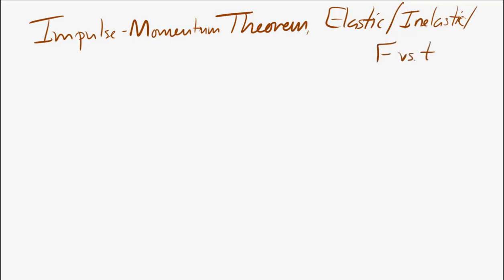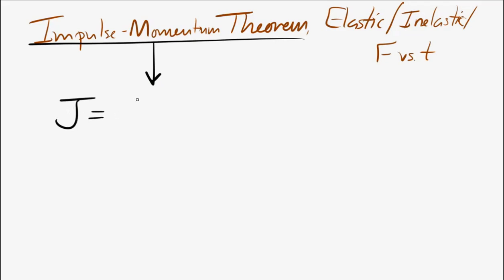The impulse-momentum theorem states that impulse is equal to the net force applied on an object times the amount of time that net force is applied, and also equals the change in momentum.